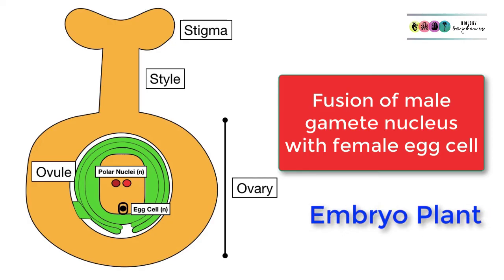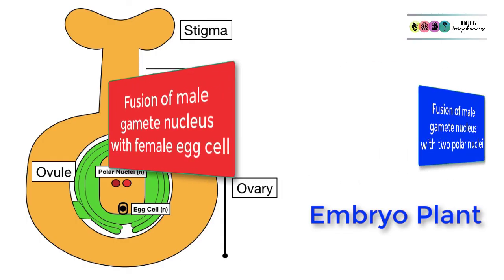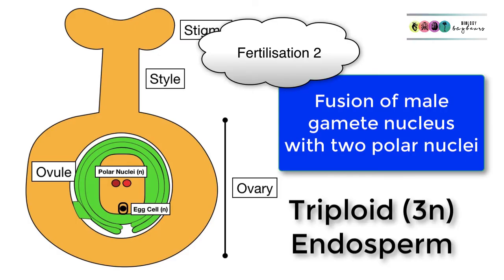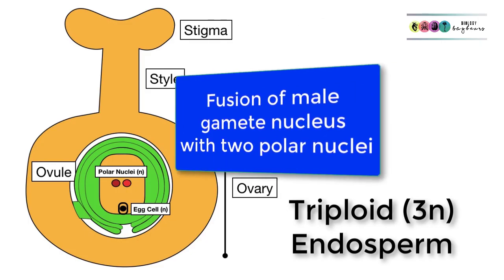The second fertilisation event was the second male sperm gamete nucleus, and it fuses with the polar nuclei to form this triploid 3n endosperm, and this is going to be the food supply for that developing embryo plant.